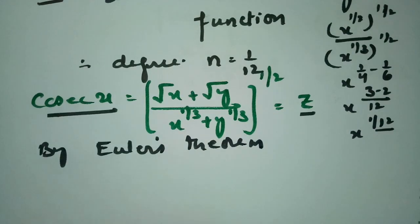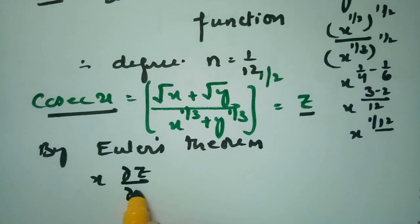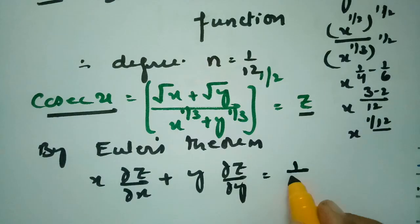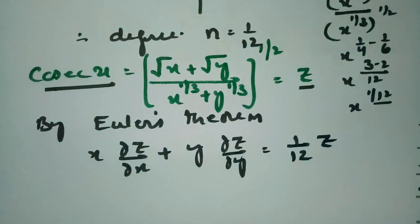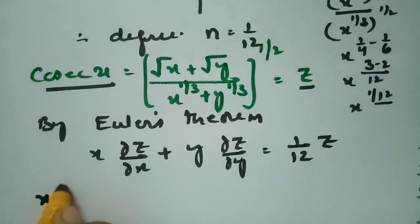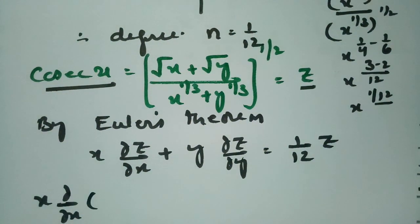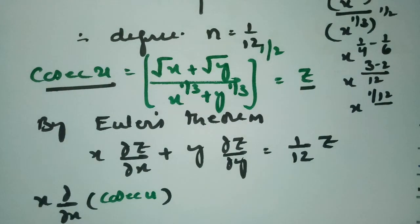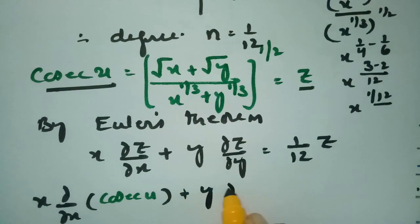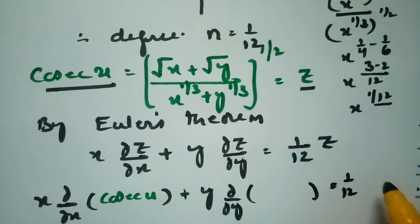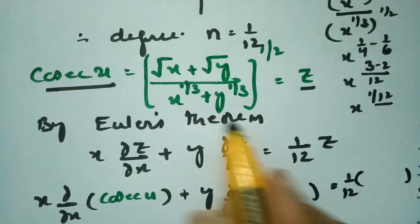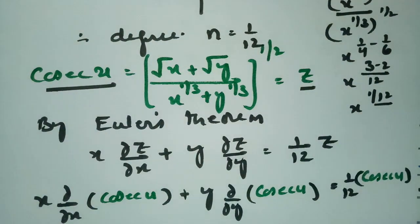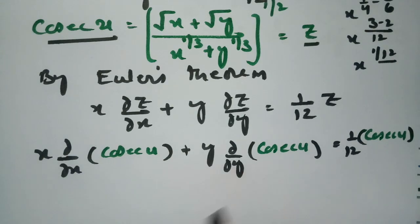By Euler's theorem: x · ∂z/∂x + y · ∂z/∂y = n·z = (1/12)·z. Since z = cosec(u), we substitute: x · ∂/∂x(cosec u) + y · ∂/∂y(cosec u) = (1/12)·cosec(u). The derivative of cosec(u) with respect to x is −cosec(u)·cot(u)·∂u/∂x, and similarly for y.